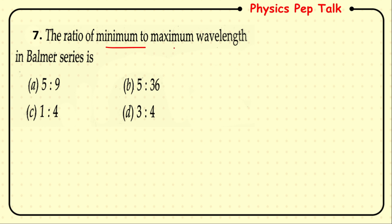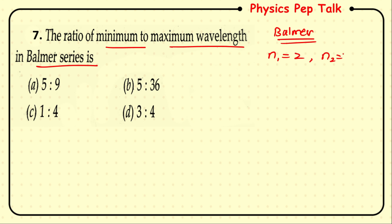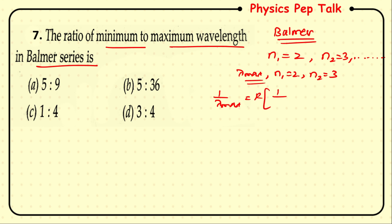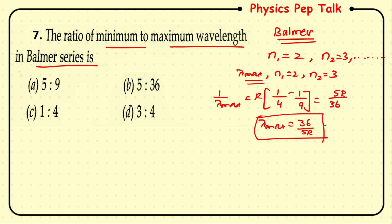Next: the ratio of minimum to maximum wavelength in the Balmer series. For the Balmer series, n₁ = 2 and n₂ = 3, 4, 5... The maximum wavelength corresponds to n₂ = 3: 1/λ_max = R(1/4 − 1/9) = 5R/36, so λ_max = 36/5R (equation 1).